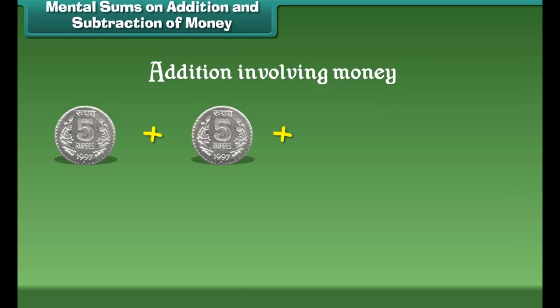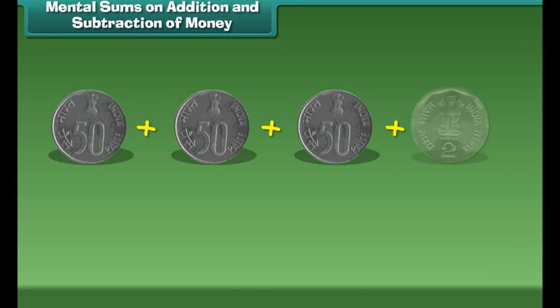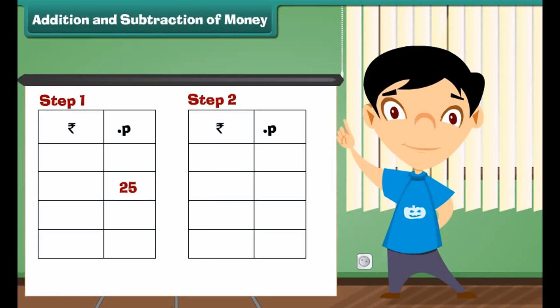Now let us learn about addition involving money. If I have 3 five rupees coins, then can you tell me the total rupees I have? Add 5 plus 5 plus 5 which is equal to 15 rupees.